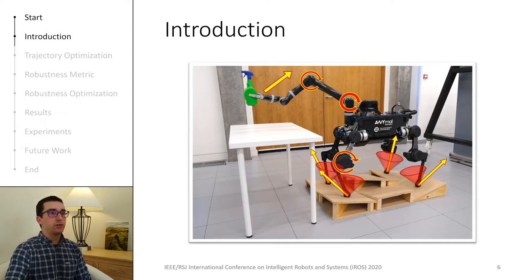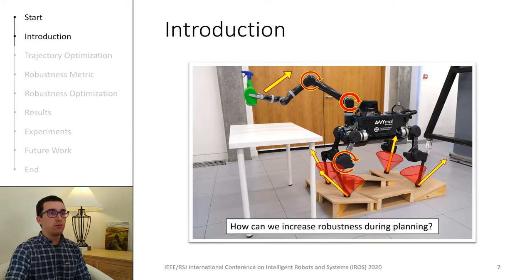In this work, we present a method to increase the robustness of robot trajectories against unknown disturbances. Some researchers have proposed robustness controllers before, however, we focus on increasing robustness at the planning stage.